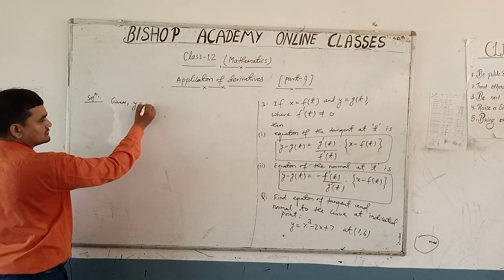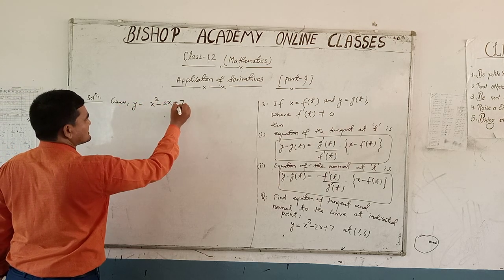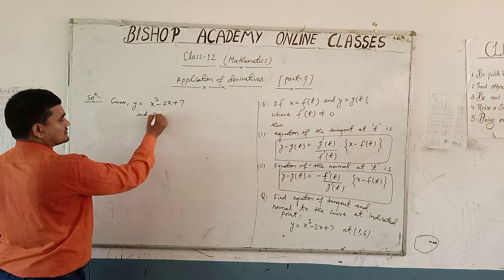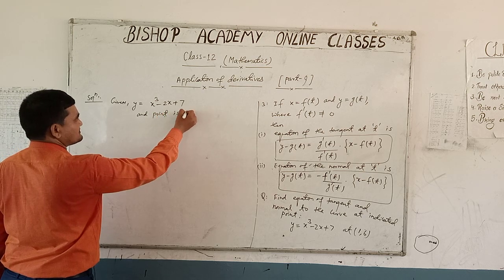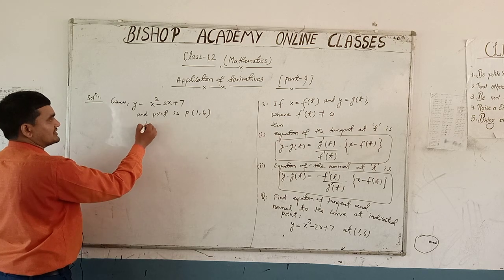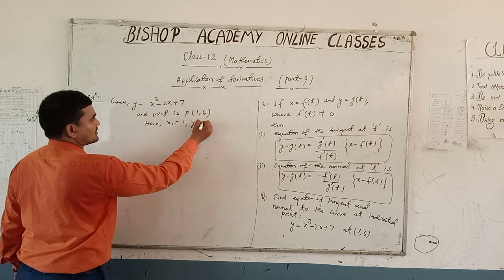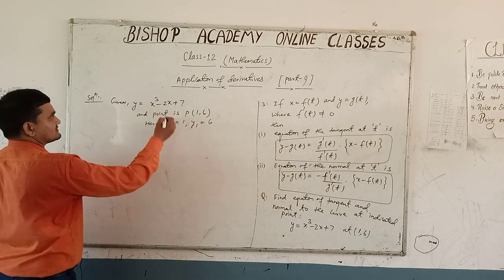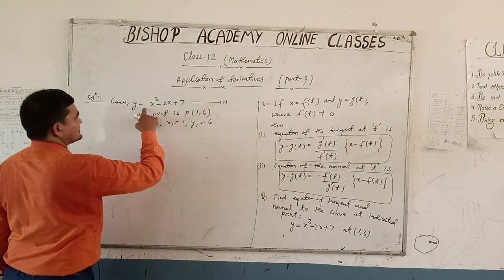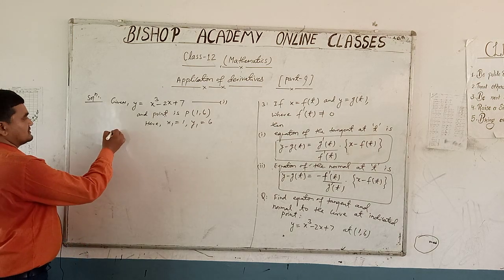So we have y = x³ − 2x + 7, and the given point is P(1, 6). Here x₁ = 1 and y₁ = 6. Let y = x³ − 2x + 7 be equation number one.